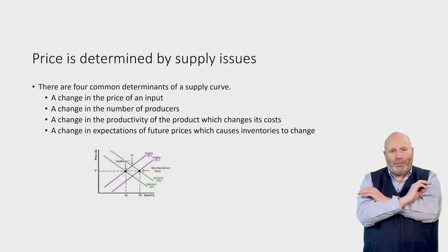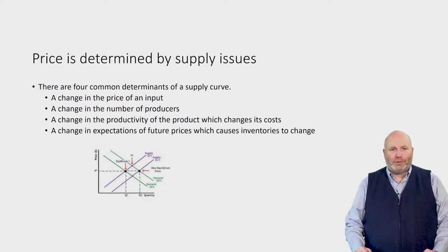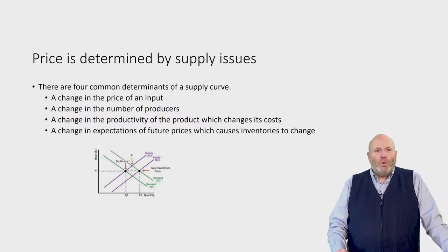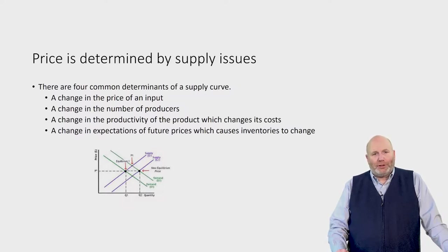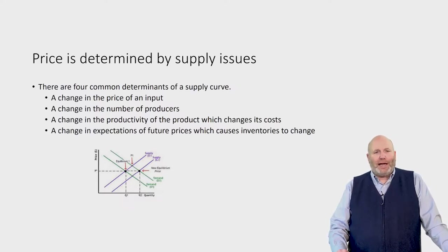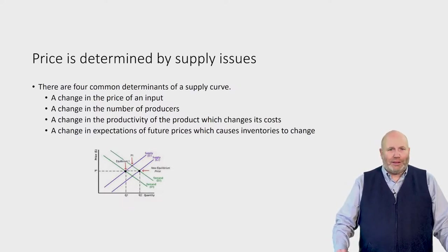Supply curves shift upward and demand curves slope downward. As we think about a supply curve, what are some things that change it? What causes a supply curve to shift outward, or shift downward? We're not talking about a movement along the supply curve, but rather an actual shift in the supply curve itself.